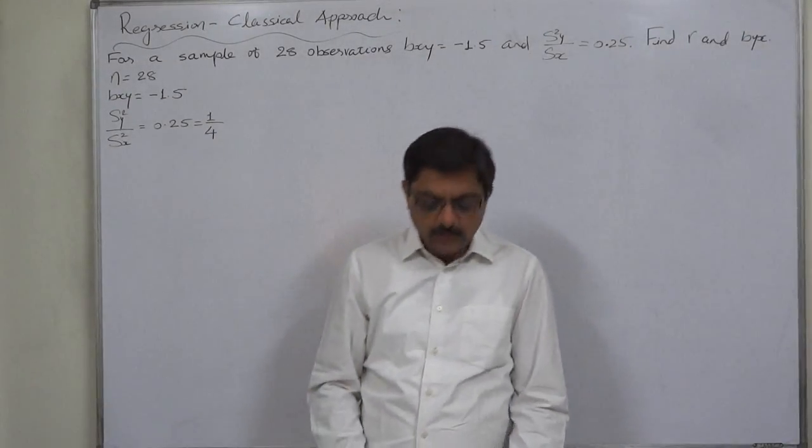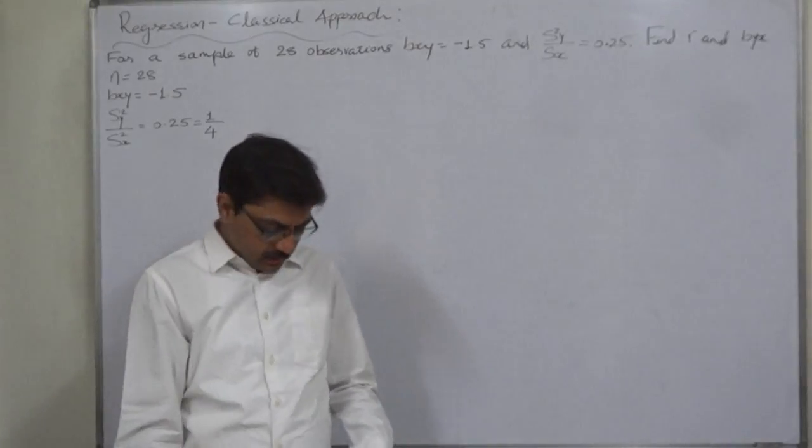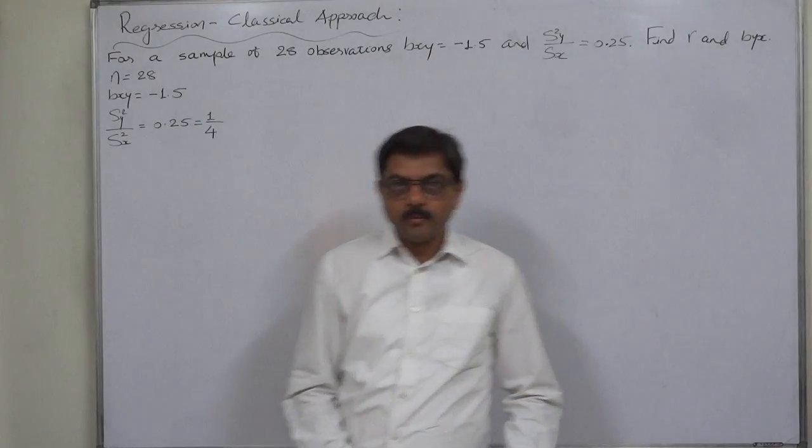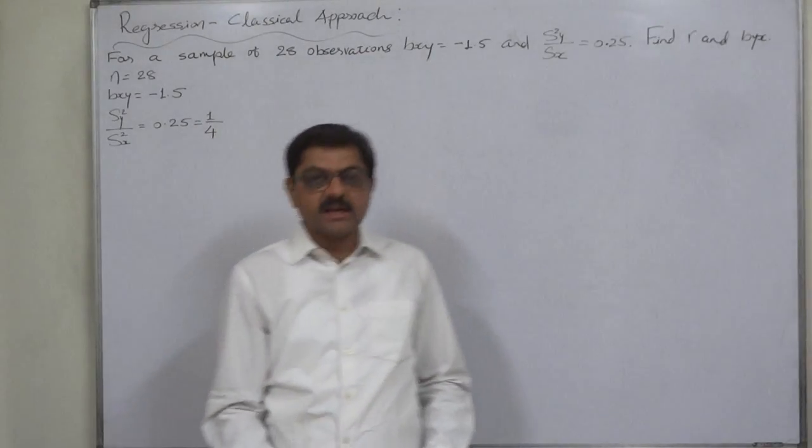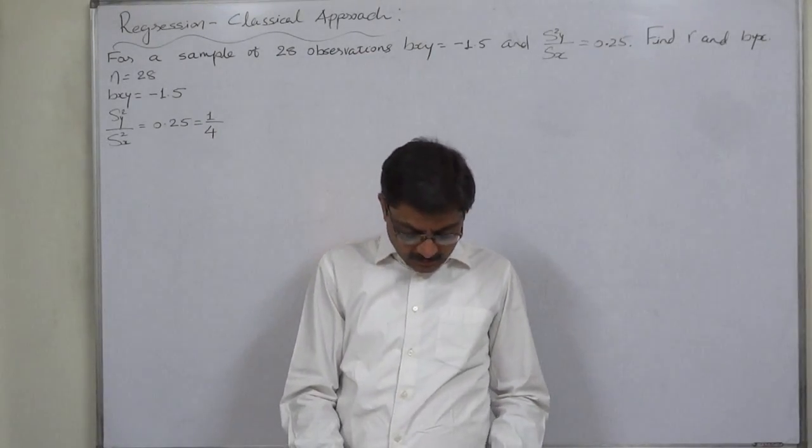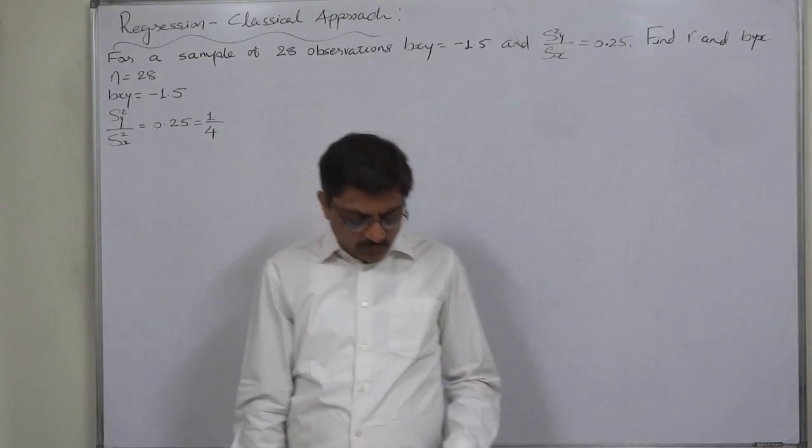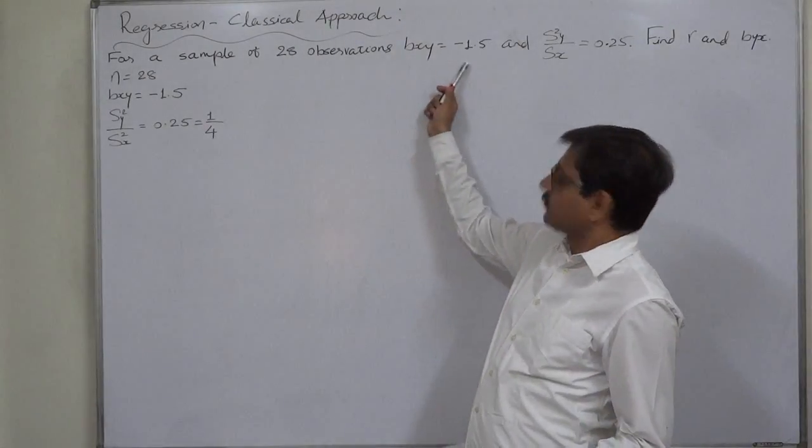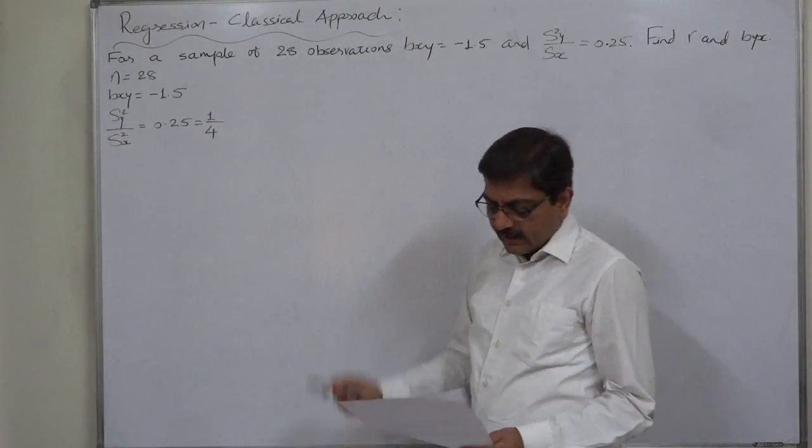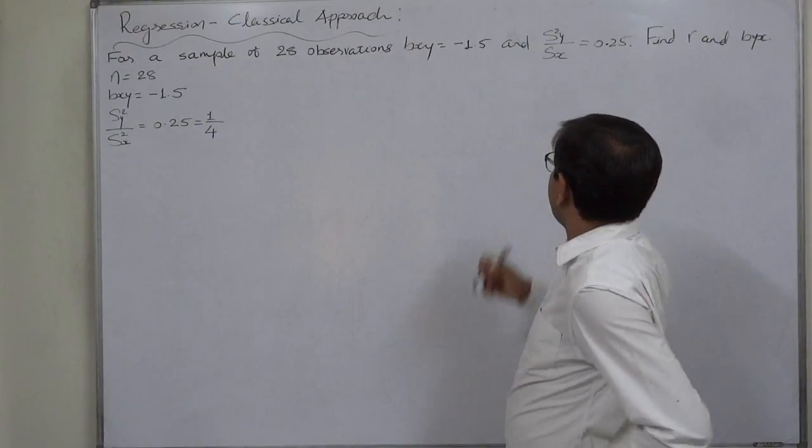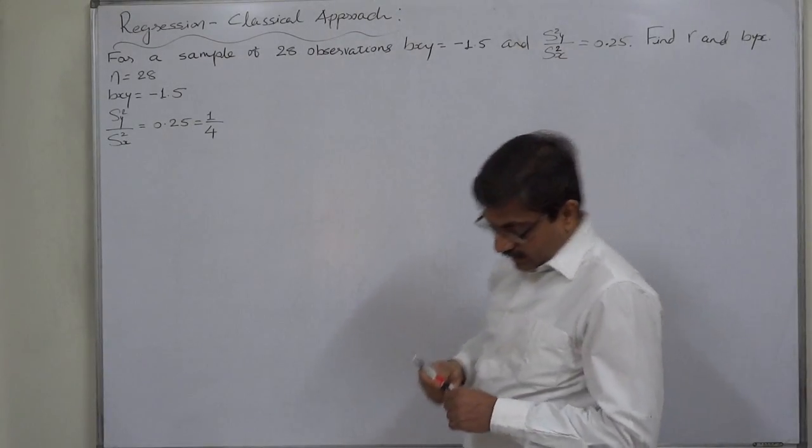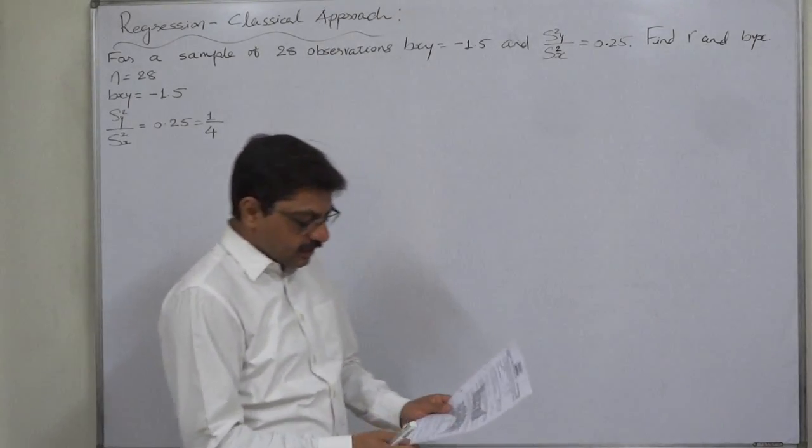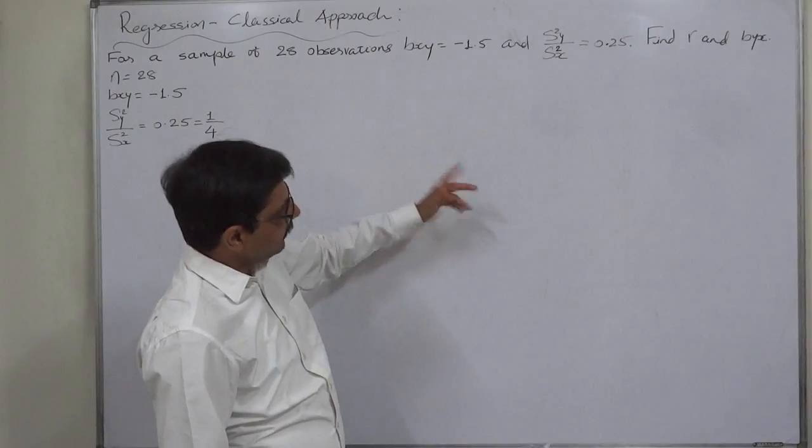Hello and welcome to a new case in regression. This time we are starting some small problems which can also be asked as MCQs. The case is: for a sample of 28 observations, Bxy equals to minus 1.5 and Sy square upon Sx square equals to 0.25. That means the ratio of variance of y to the variance of x is 0.25 or say 1 by 4.